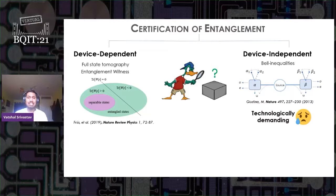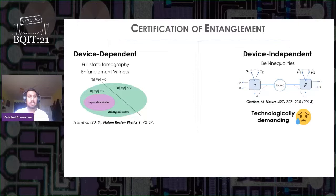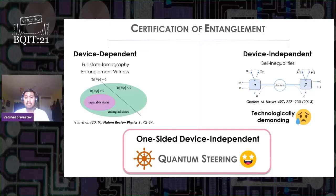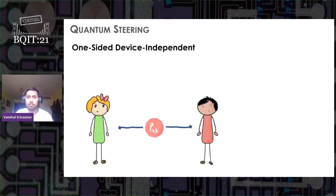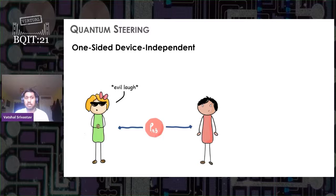It requires very high state fidelities and offers extremely low tolerance to noise. But there is a middle ground between device dependent and device independent, which is one-sided device independent. This relaxes the strict technological requirements of device independent case. Now imagine a state rho AB shared between Alice and Bob. In this case, in one-sided device independent case, we will not trust Alice's side of measurement.